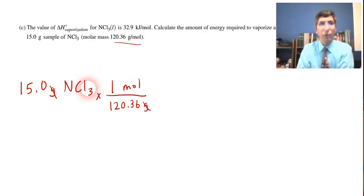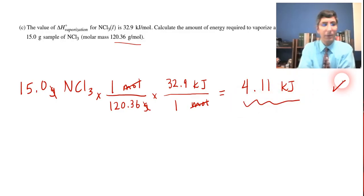Grams will cancel, we're in moles of nitrogen trichloride, and we can convert to kilojoules using this conversion factor right here. We can put moles on the bottom and kilojoules on top. And it says that the heat of vaporization for this is 32.9 kilojoules per mole. So we put that in there, moles are out, and we do the multiplication and division. The answer I get is about 4.11 kilojoules. And so that is the answer there. So we'll say one point for that one.